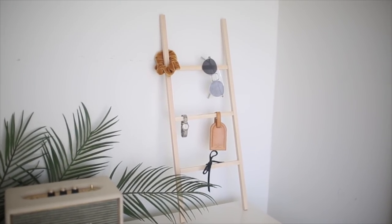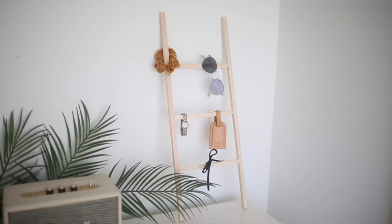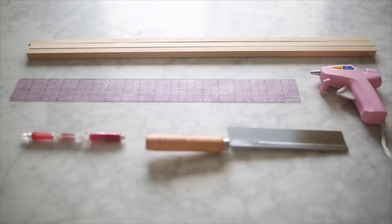For the first DIY we're making this mini organizational ladder. I've seen larger ones of these so I really wanted to make a small one for my room. For this you're just going to need three pieces of wood, a ruler, a pencil, a hot glue gun, and then some sort of saw or something to cut your wood with.